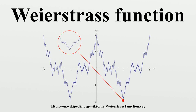The Weierstrass function could perhaps be described as one of the very first fractals studied, although this term was not used until much later. The function has detail at every level, so zooming in on a piece of the curve does not show it getting progressively closer and closer to a straight line. Rather, between any two points, no matter how close, the function will not be monotone.